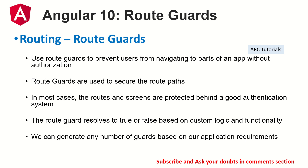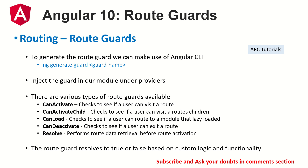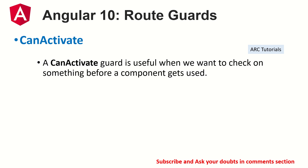Now, how do you generate a guard? We use 'ng generate guard' and give it a guard name. When we do that, it gives us a prompt asking which type of interface you want to implement. There are four types: CanActivate, CanActivateChild, CanLoad, and CanDeactivate. I will cover each one in detail. Today we are focusing on the CanActivate interface, which is useful when you want to check something before a component gets accessed — the most basic check.